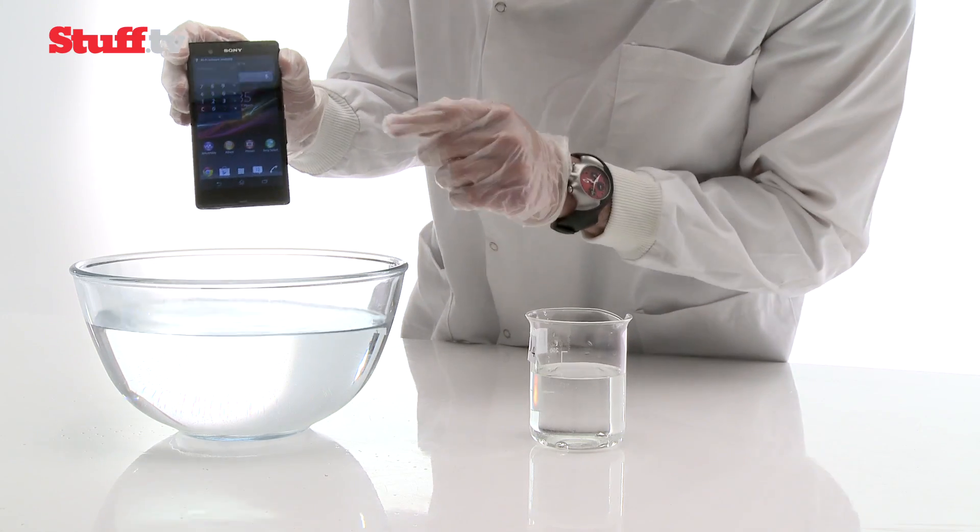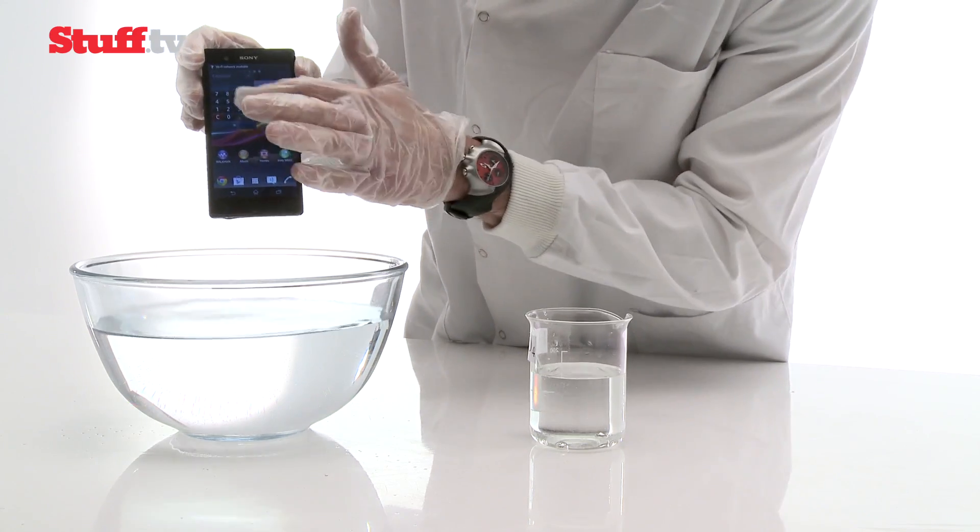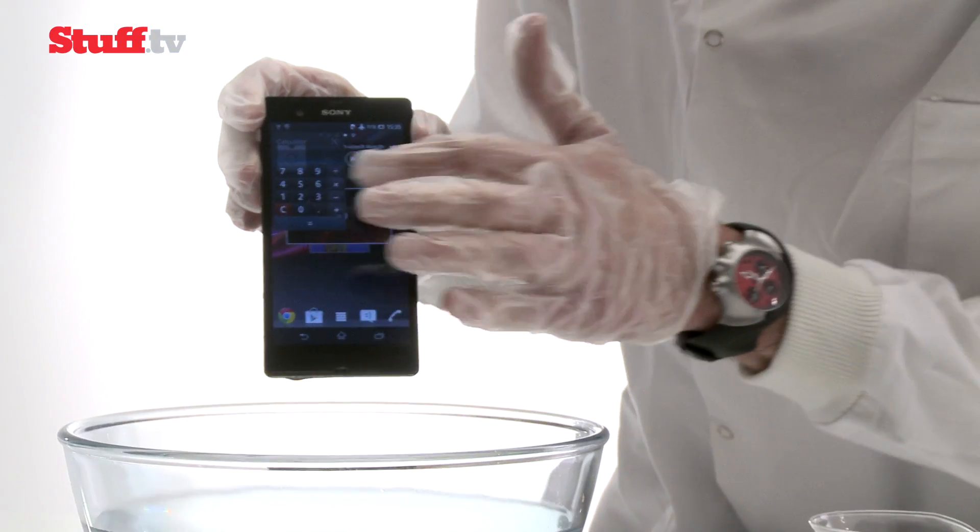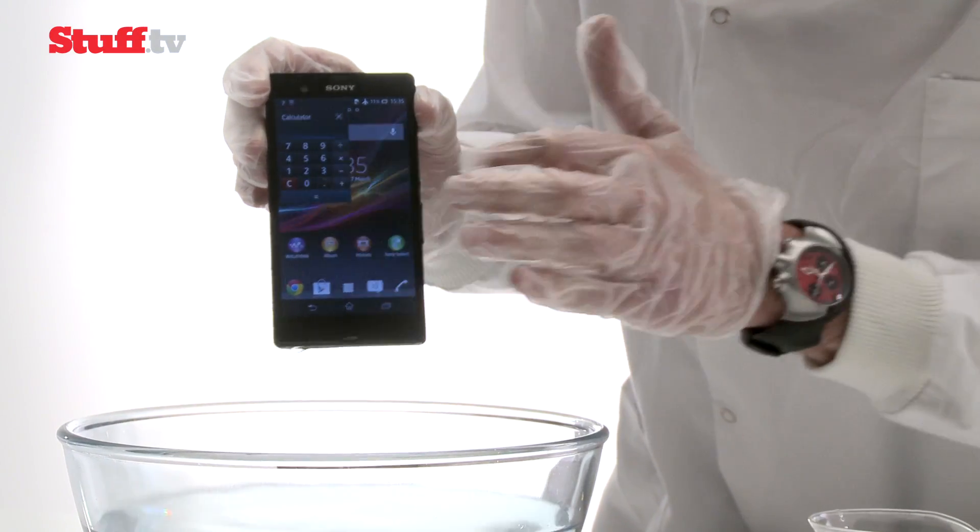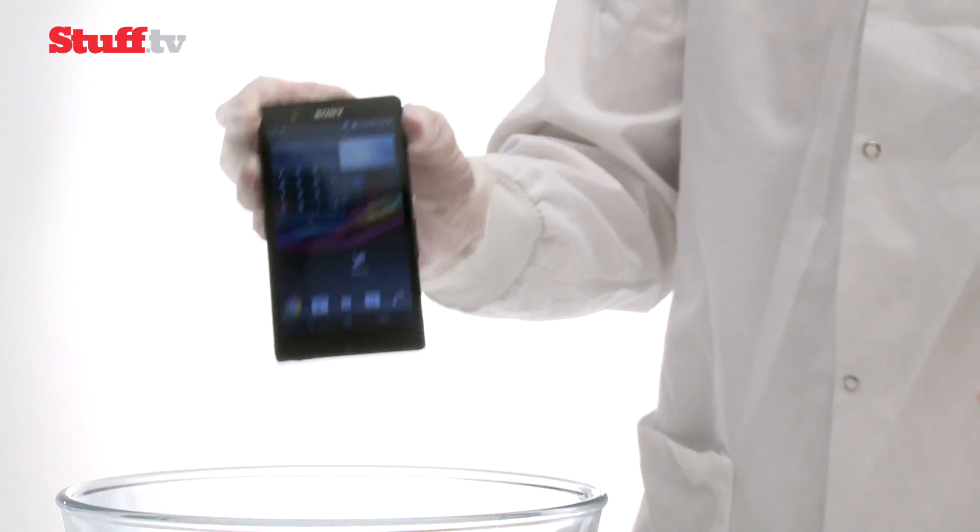So let's check out the damage and everything seems to be intact. The screen, yep the screen works. So there you have it, the Xperia Z is a lot stronger than you might think.